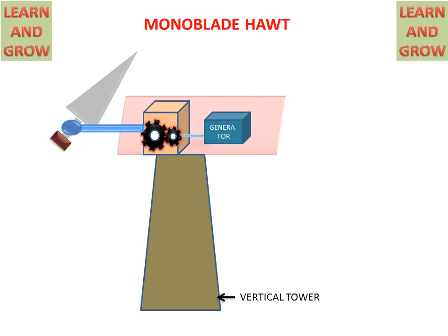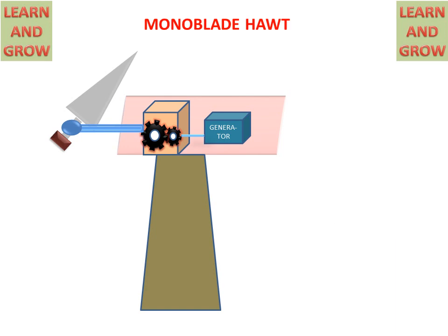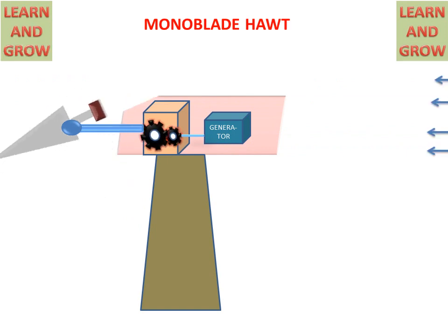If air comes from the left side it is called upside direction, and if air comes from the right hand side it is called downward direction. In mono blade HAWT, air comes from the right hand side or behind the mono blade — this is also called downside wind. It will strike on the mono blade, which is connected to the gears of the gearbox with a shaft.